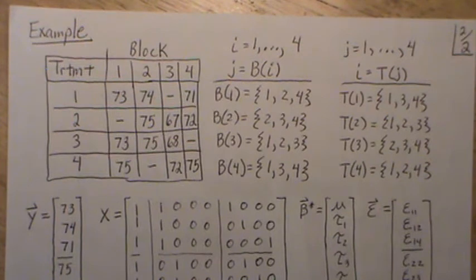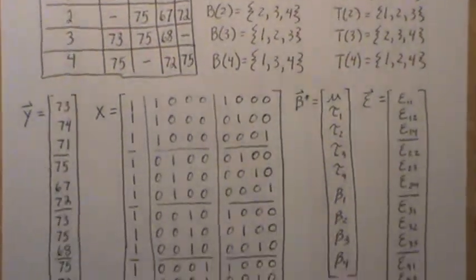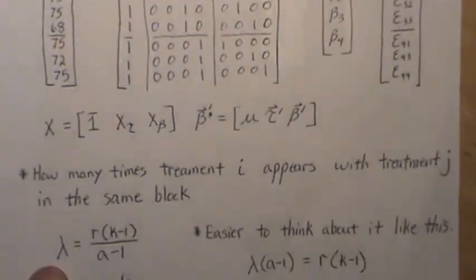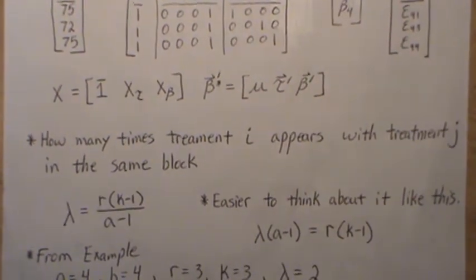Earlier I pointed out how many times pairs occur. There's a symbol for that we call lambda. To me it's actually horrible notation because lambda is used in contrasts later in this series, but almost all the books call it lambda.